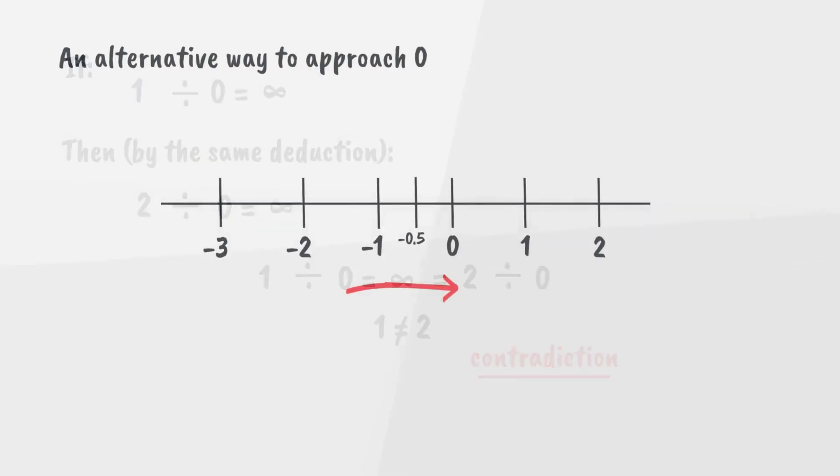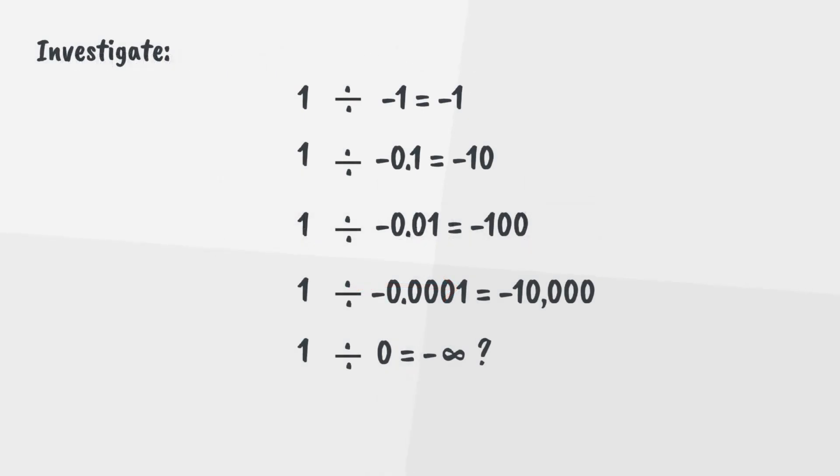We can also analyze an alternative way to approach zero. It's possible to do this from the left-hand side of the number line, where values are becoming less and less negative. In fact, we can construct an almost identical argument this way. The issue now, however, is that as values tend towards zero, the solution tends towards negative infinity.